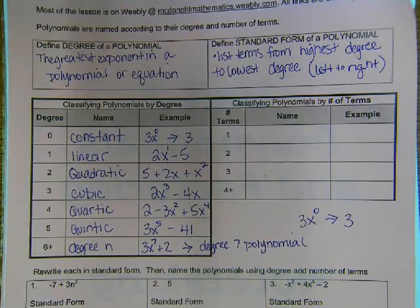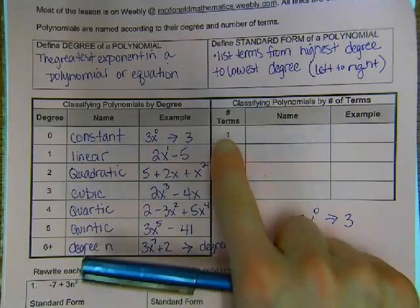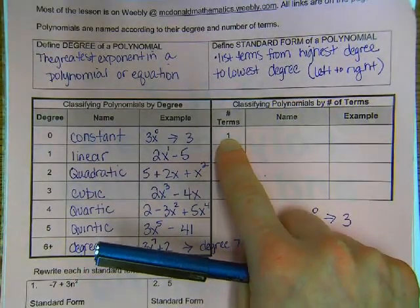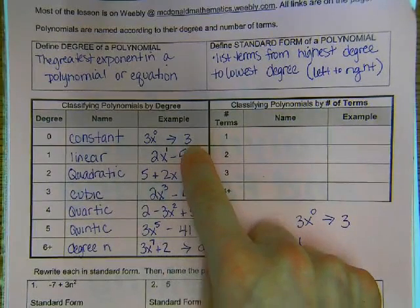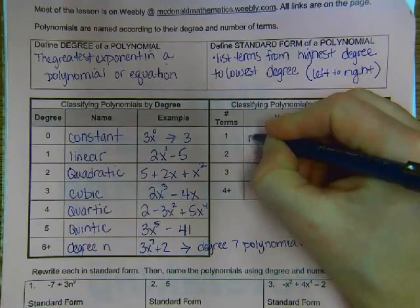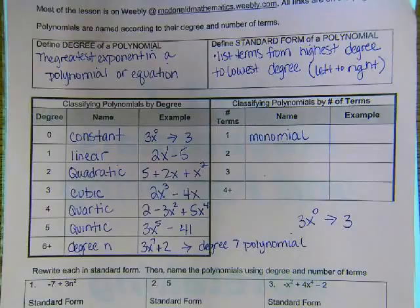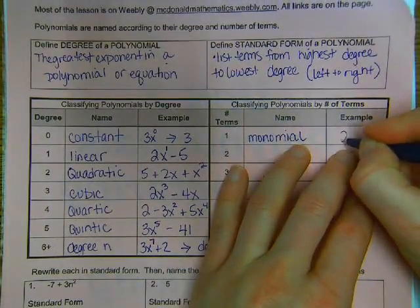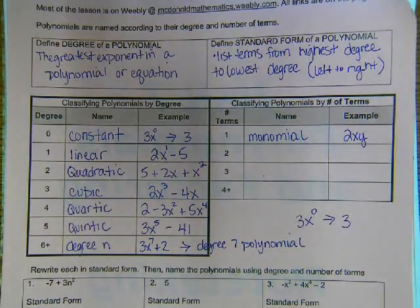Now we're going to classify polynomials by the number of terms. Terms are separated with an addition or a subtraction. And so if something has one term, that just means there's one of them. Like for instance, let's find things that had one term. Well, this one did, right? But other than that, they didn't. We call this a monomial. A monomial just has one term. An example would be, let's say I had 2xy. That's just one thing. One term.